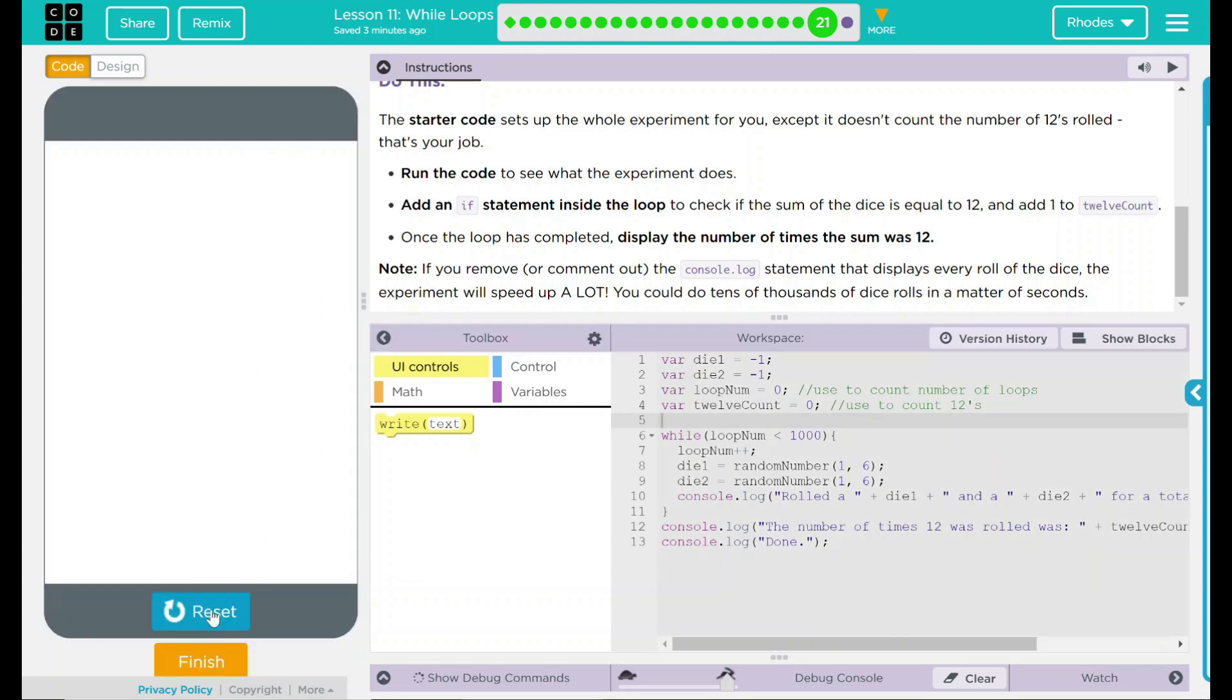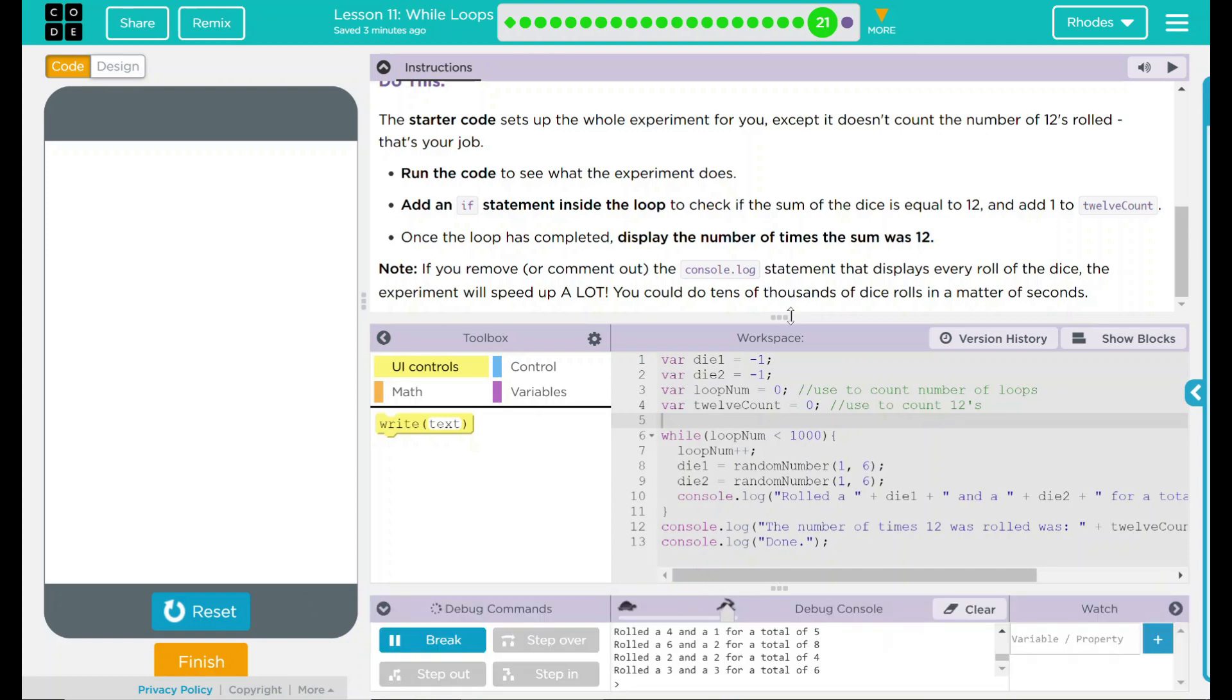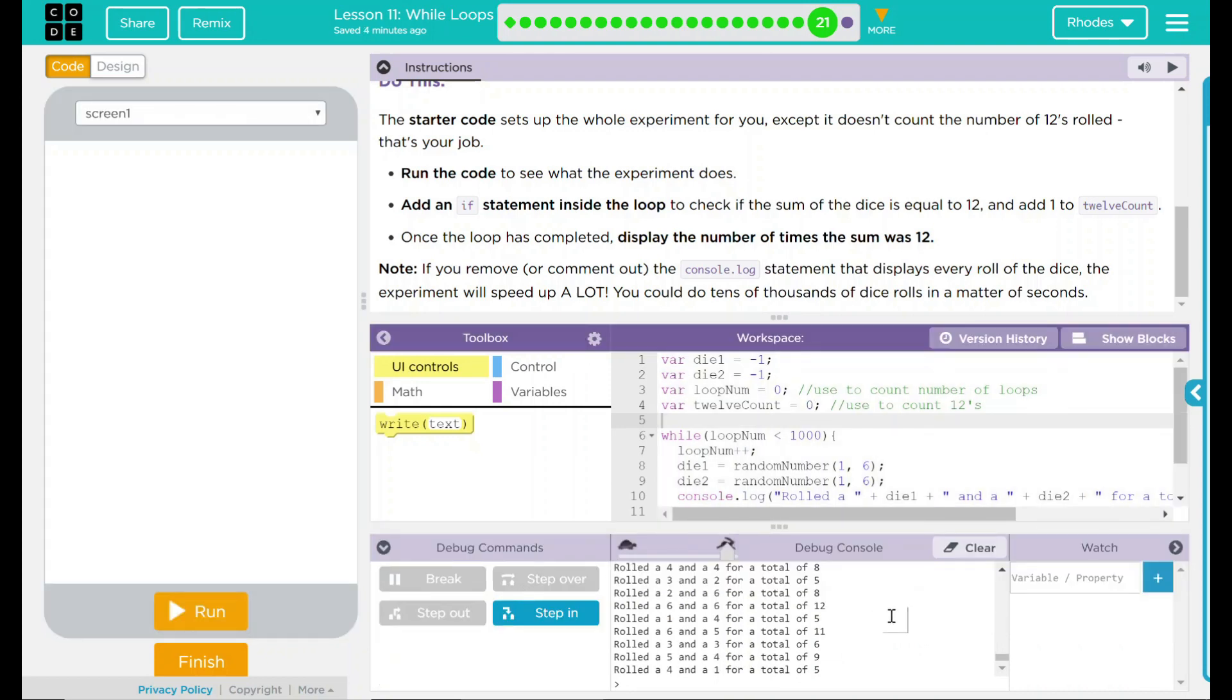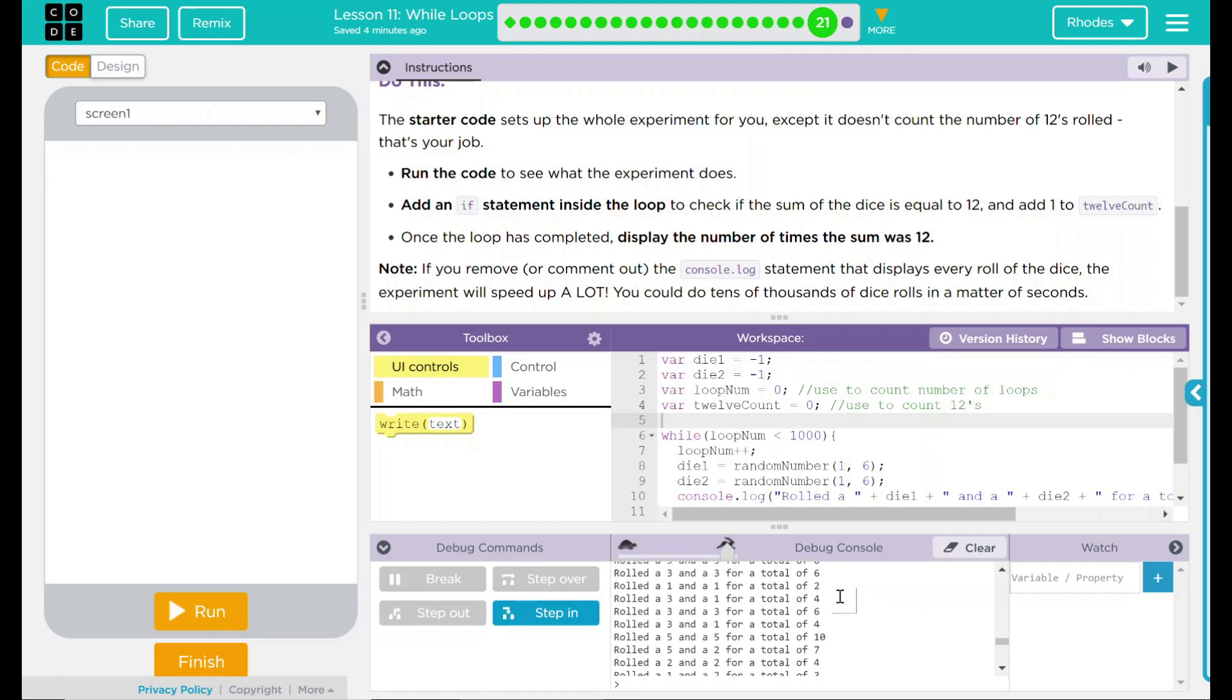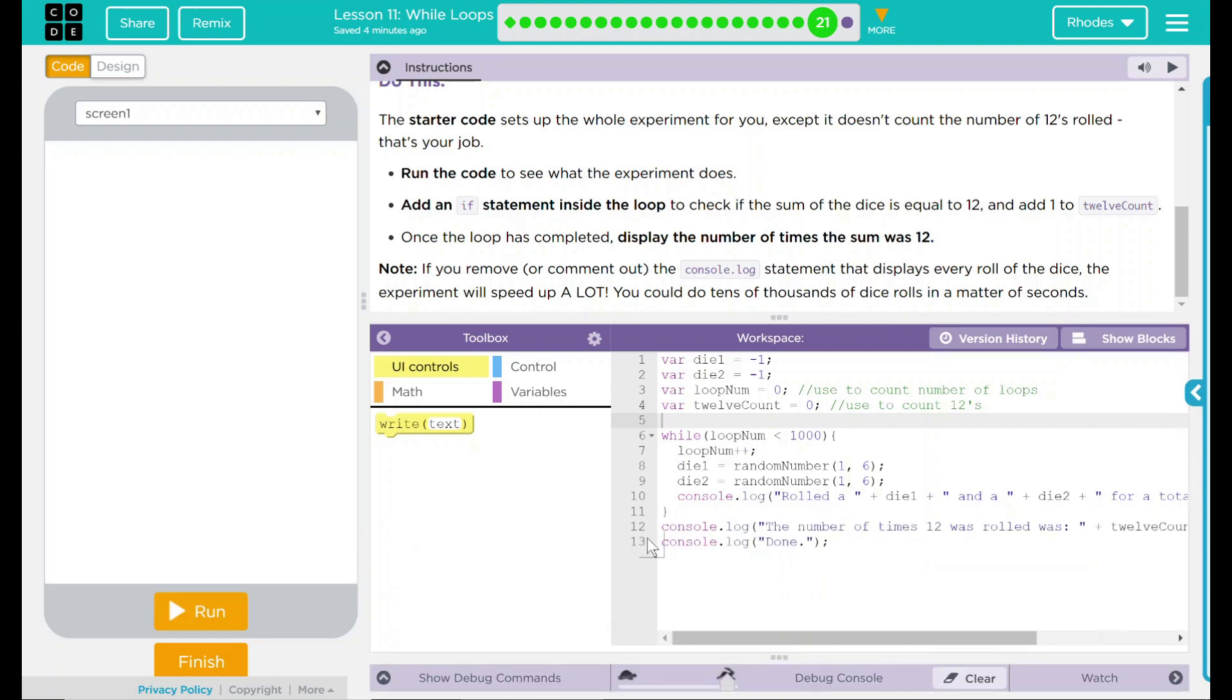Let's run it and see what happens. Looks like it's thinking down here in my debug console. Still thinking. If we come up here and look at it, we should stop this for a second because it's still going. It rolled tons and tons of numbers here. But really, we just want to know the sum of 12. Looked like it rolled a two, three times, maybe more if we look through it. So what do we need to do?